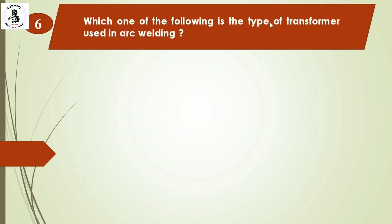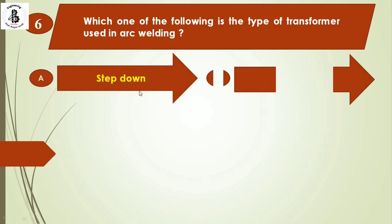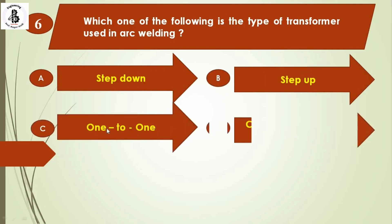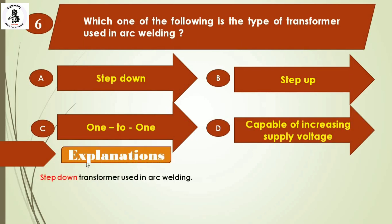The next question: which one of the following is the type of transformer used in arc welding? Option A: step-down transformer, Option B: step-up, Option C: one-to-one, and Option D: capable of increasing supply voltage. A step-down transformer is used in arc welding. The right answer is Option A.